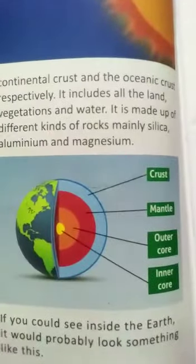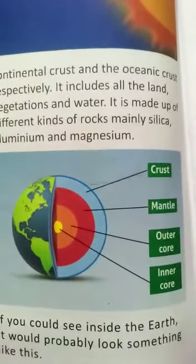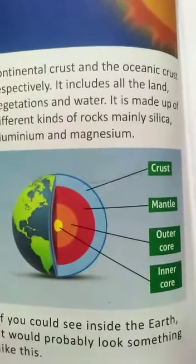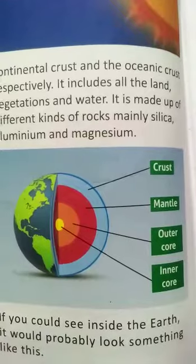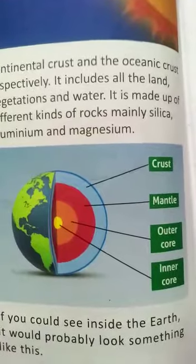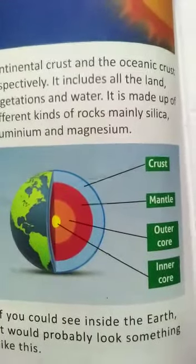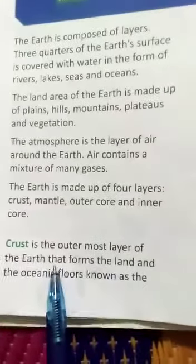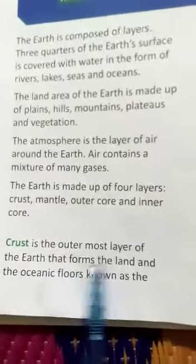You have to learn the spellings and you have to make these four layers of Earth in your notebook beautifully. Let's start reading about these four layers of the Earth. Crust — crust is the outermost layer of the Earth that forms the land and the oceanic floors,